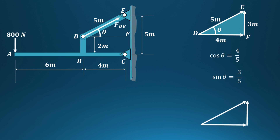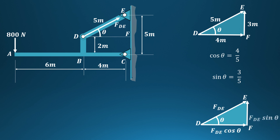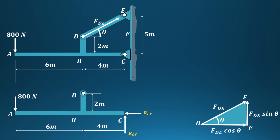Now we can find out the resolved components of the forces in link DE. The force along link DE is FDE. The horizontal component is FDE·cos θ, and the vertical component is FDE·sin θ. Using these values we can find out the reactions at the supports.